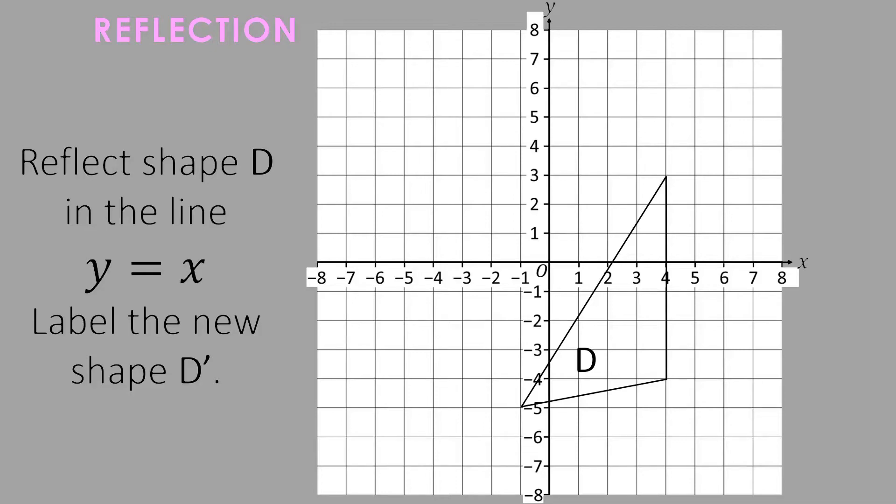Let's have a look at this example: reflect shape D in the line y equals x, label the new shape D'. So the mirror this time is going to be y equals x which is this line here. So again we find each of the points, measure to the mirror and remember you have to measure straight to the mirror or in other words perpendicular to the mirror.